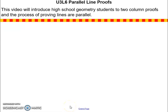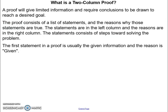Hello, Patriots. What we're going to talk about today is I'm going to introduce you to what we call two-column proofs. A proof is nothing more than saying something and then saying why we said it. A proof will give us limited information and require us to draw conclusions to reach our goal.